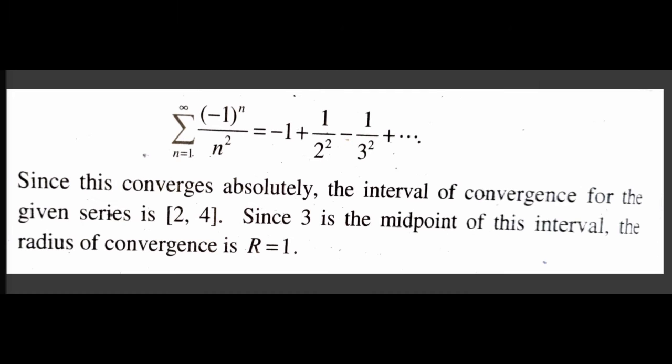If x equal to 2, the series is sigma n equal to 1 to infinity minus 1 raised to n divided by n square, that is equal to minus 1 plus 1 by 2 square minus 1 by 3 square plus etc. Since this converges absolutely, the interval of convergence for the given series is the closed interval 2 to 4. Since 3 is the midpoint of this interval, the radius of convergence R equal to 1.